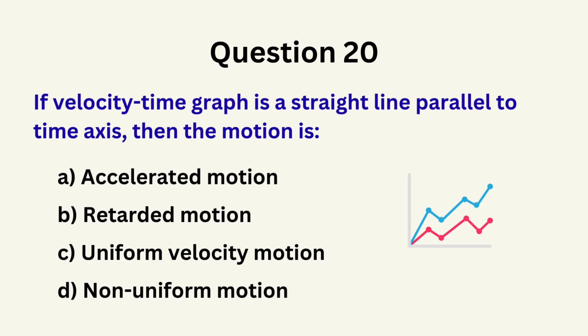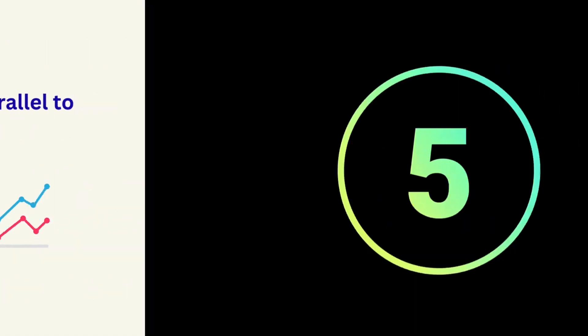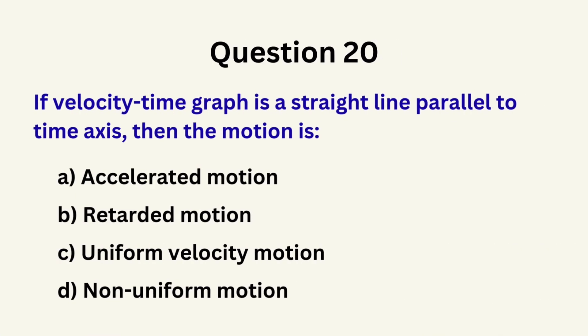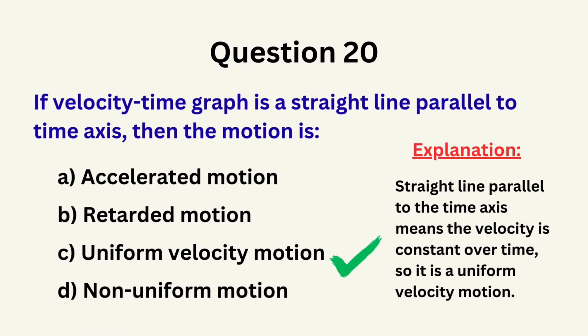Question 20: If the velocity-time graph is a straight line parallel to the time axis, then the motion is... A. Accelerated motion, B. Retarded motion, C. Uniform velocity motion, D. Non-uniform motion. The correct answer is C: uniform velocity motion.